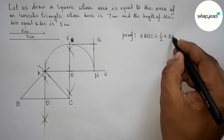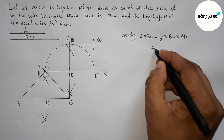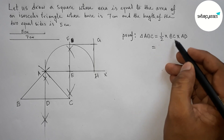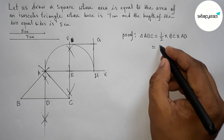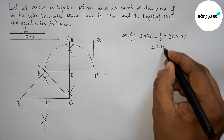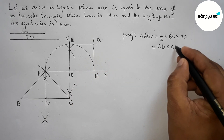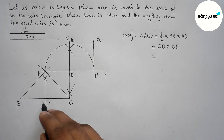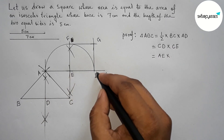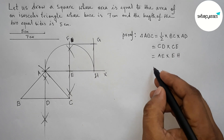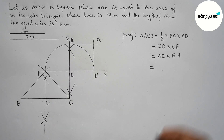Area of triangle ABC equals half of base times height, which is half of BC times AD. Since the perpendicular bisects BC, half of BC equals CD. Also, AD equals CE. So substituting: area of triangle = CD times CE, which equals EH times AE — taking these as the relevant segment lengths.